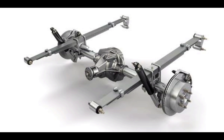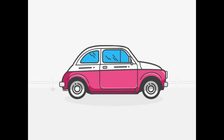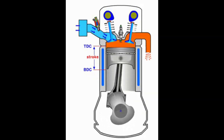The live axle, where motion is transferred from the engine crankshaft, is responsible for driving the vehicle. In contrast, the other axle, known as the dead axle, primarily bears the vehicle's weight. While motion is typically directed to the rear axle, it can be distributed to the front axle or even both, resulting in a four-wheel drive configuration. Ultimately, the live axle transmits motion to the road wheels, allowing them to rotate and generate the necessary friction with the road surface for vehicle movement.